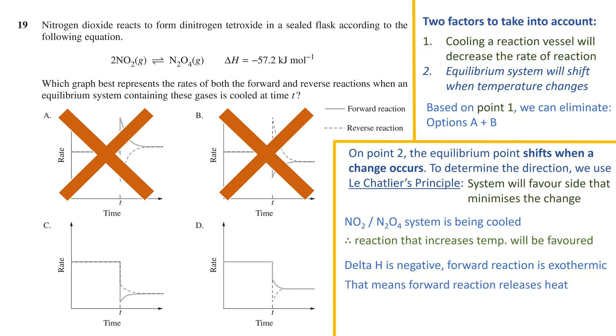Exothermic reactions release heat, and therefore, the forward reaction releases heat, which would counteract the cooling event at time t. Therefore, the forward reaction is favored.